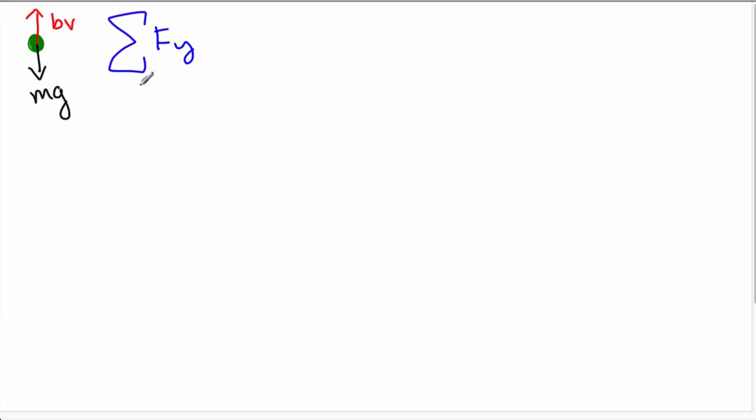So the sum of the forces in the y direction, let's call down plus y since that's the direction of motion. That's going to equal ma. A is not a constant in this case. It's going to be mg, which is pointing down, minus b times v.